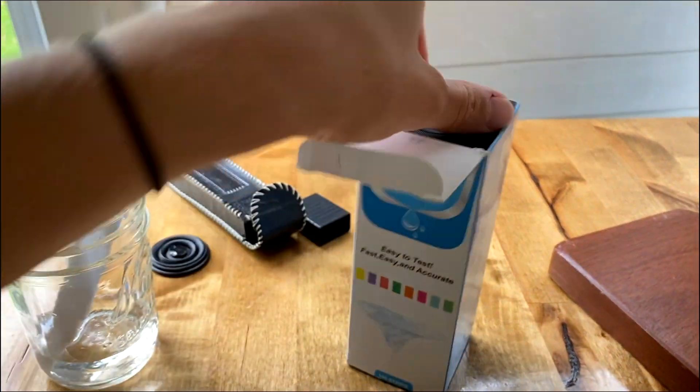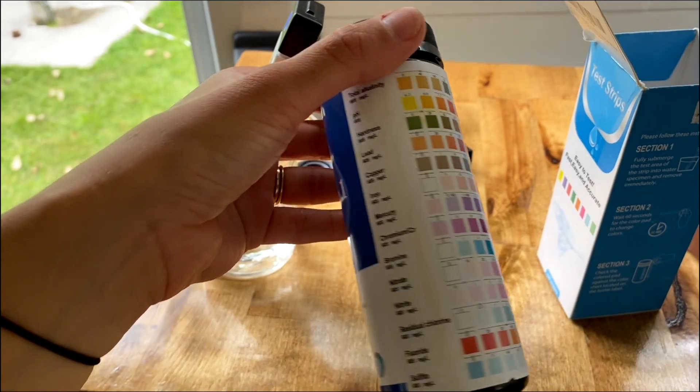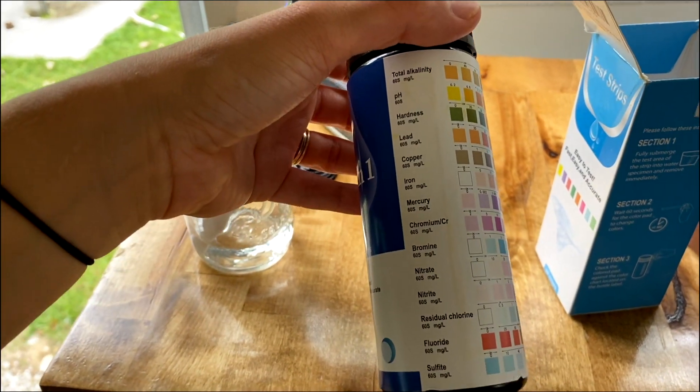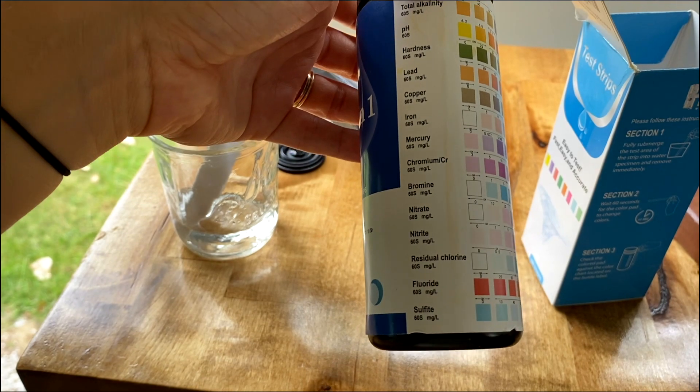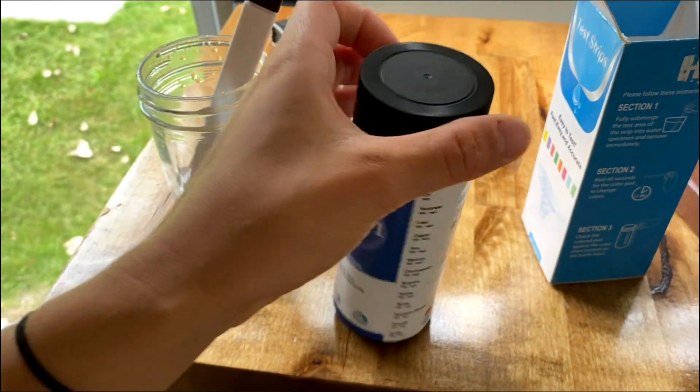So we do have other ways of testing the water. Basically put a strip in and you can see the lead, alkalinity, pH, and kind of get a feel for it.